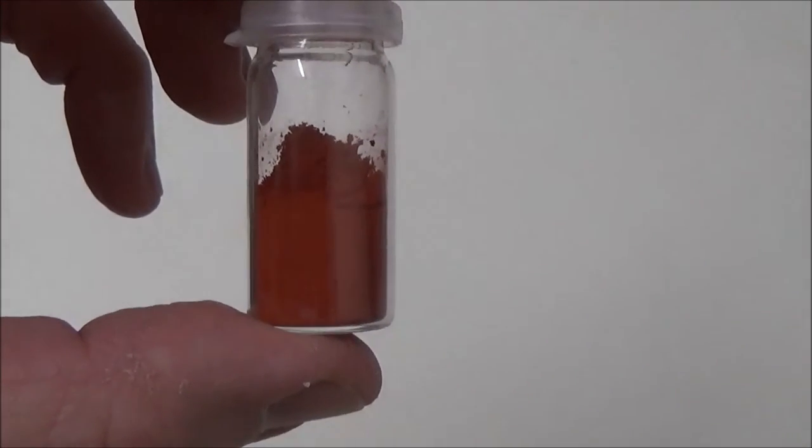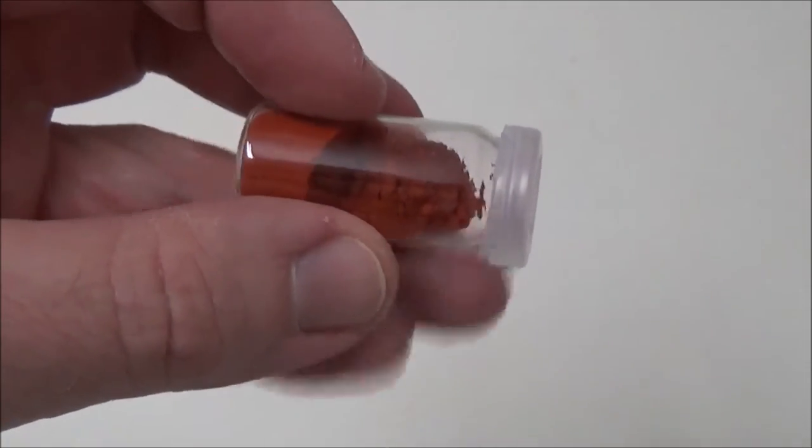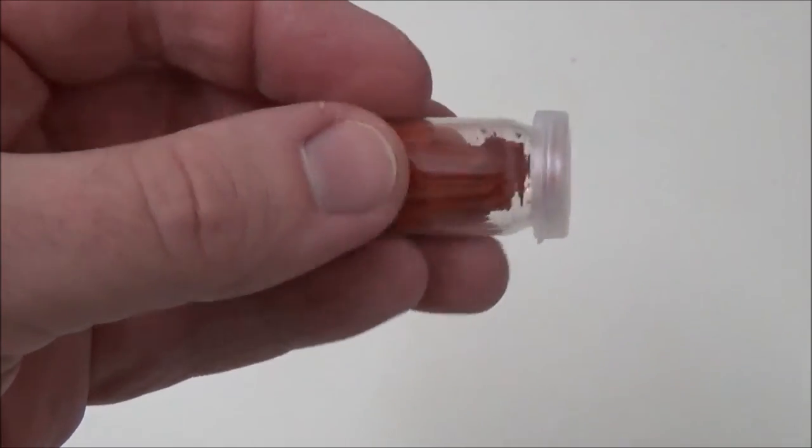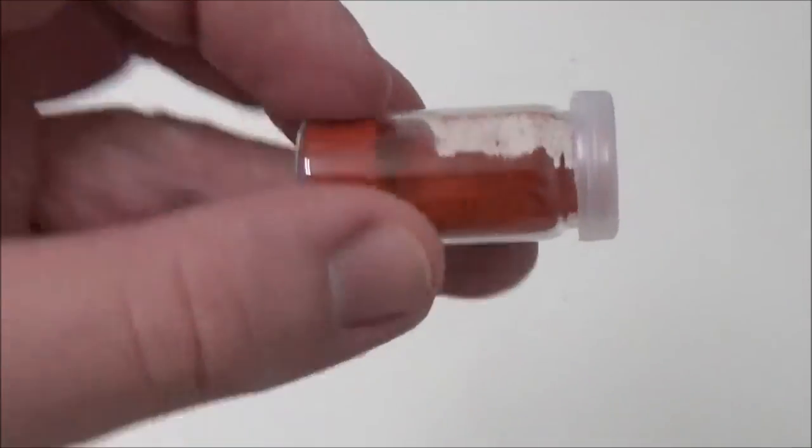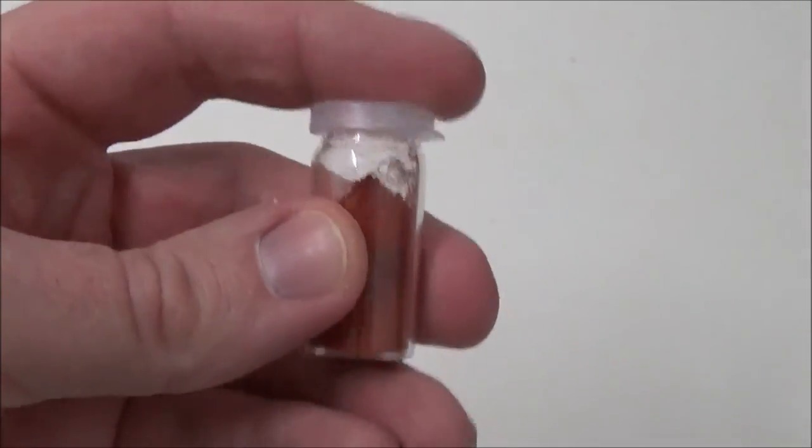Finally, we obtained 1.7 g of a dry red powder of pure fluorescein. This corresponds to a yield of 51.2% compared to the theoretical result, which should certainly be better on a larger scale and with a longer reaction time for the melt.